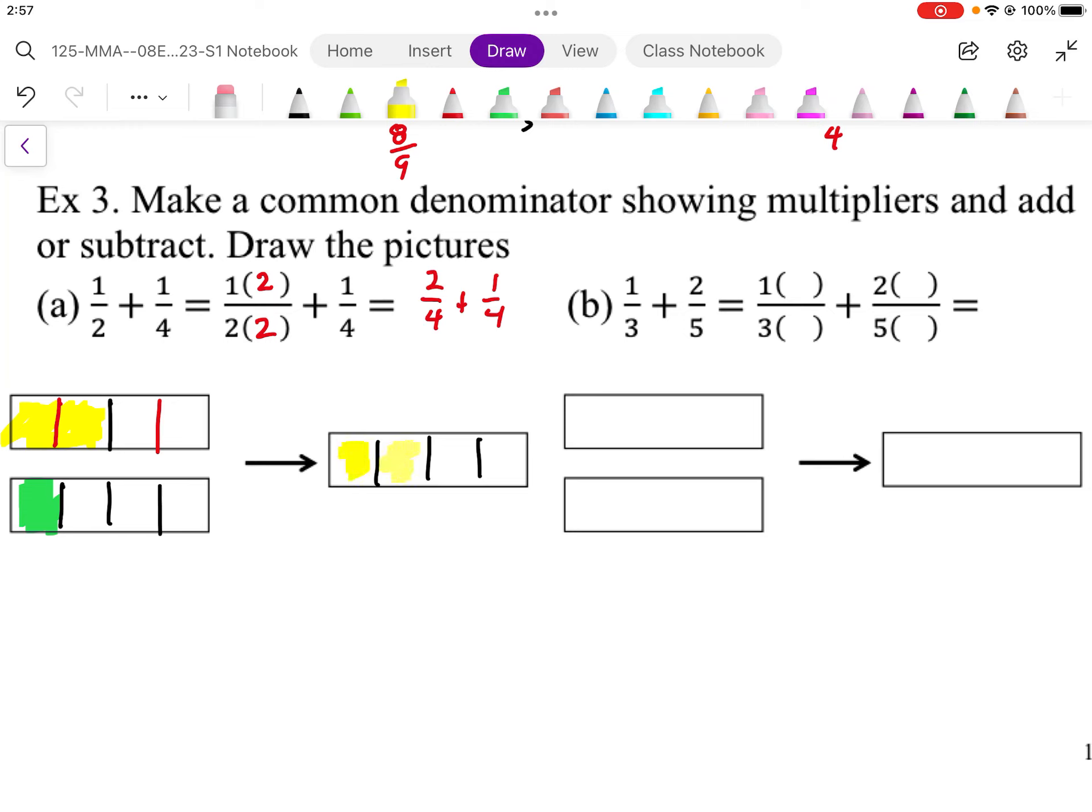So I'm going to have my two parts shaded like that and my one part shaded like that. And that's going to give me an answer of three parts shaded out of four parts whole.